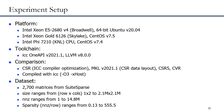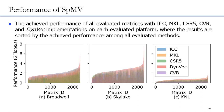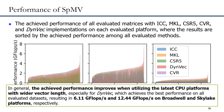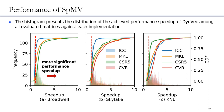The evaluation results are shown in the figure, representing the achieved performance of all evaluated matrices with ICC, MKL, CSR5, CVR, and DEMV implementations on each evaluated platform, sorted by achieved performance. In general, the achieved performance improves when utilizing the latest CPU platform with wider vector lanes. Especially for DEMV, it achieves the best performance on all evaluated datasets, resulting in 6.11 GFlops and 12.44 GFlops on Broadwell and Skylake platforms respectively. Note that CVR only supports AVX-512, thus it is only evaluated on Skylake and KNL platforms.